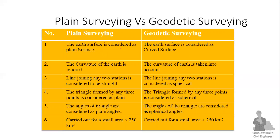Comparing the two types: In plane surveying, the earth's surface is considered a plane surface and curvature is ignored, while in geodetic surveying, the earth's surface is considered curved and curvature is taken into account. In plane surveying, lines between stations are straight and triangles are plane triangles with plane angles. In geodetic surveying, lines are curved, triangles are spherical, and angles are spherical angles.